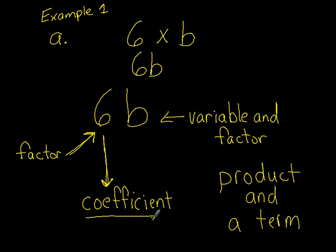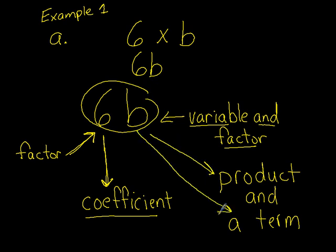We have 6 in this term. It's called the factor. And it's also what we call the coefficient. So we'll be using this word. It's probably new to you. And on this side, the letter B is the variable and a factor. And the whole thing, 6B, we call that a product and we also call it a term.